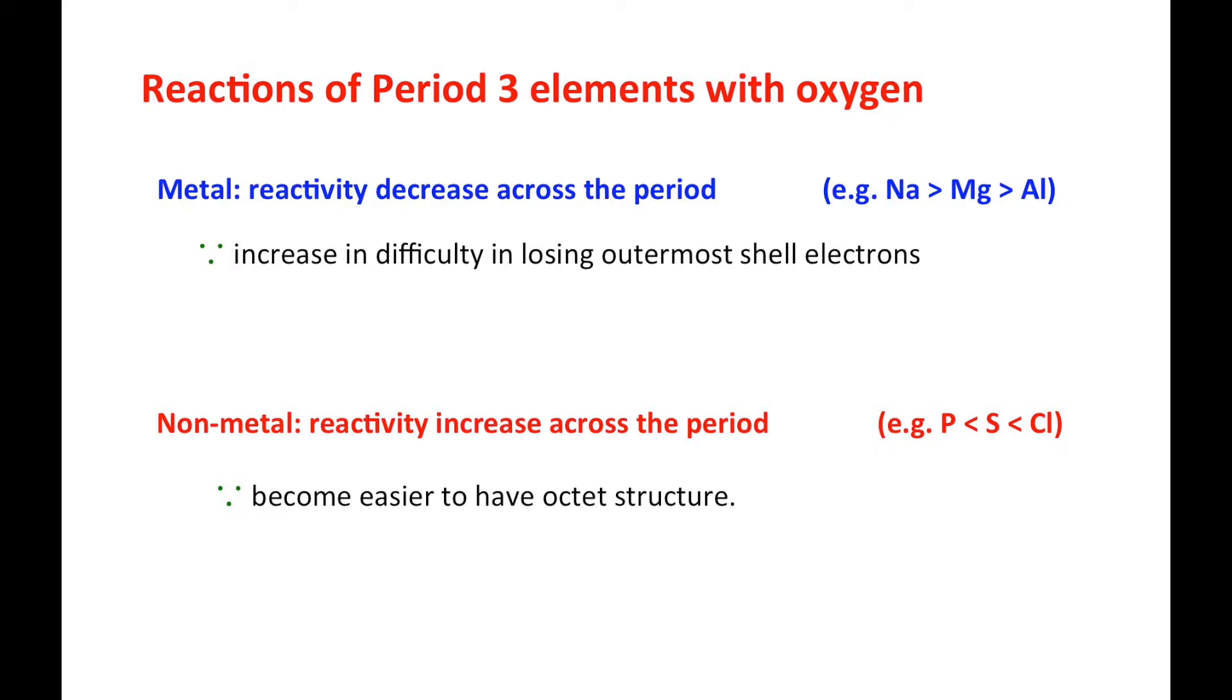For example, sodium only needs to lose one electron, but aluminum needs to lose three. So sodium can finish the task easily.